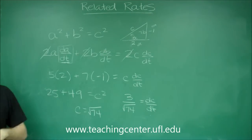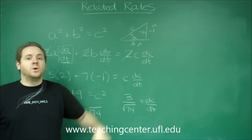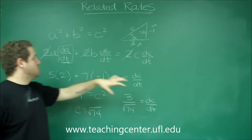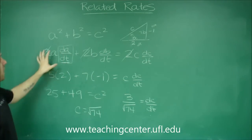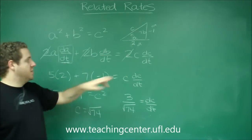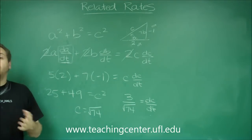Or that you need to know to figure out the one that you don't know. In this case always think about what you're asked for, in this case we were asked for DC DT. So I need to know everything else. Well I almost knew everything else just from the information given, there was one thing I needed to figure out and that was C. That's easily done by using the equation before I took the derivative.